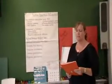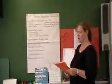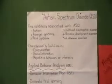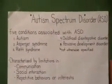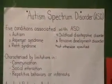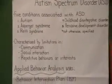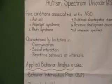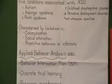I have decided to do my presentation on Applied Behavior Analysis, ABA, for students with Autism Spectrum Disorder. The five conditions associated with ASD are Autism, Asperger's Syndrome, Rett Syndrome, Childhood Disintegrative Disorder, and Pervasive Development Disorder, which is characterized by limitations in communication, social interaction, repetitive behaviors, or interest.